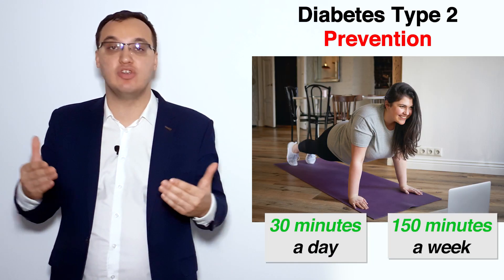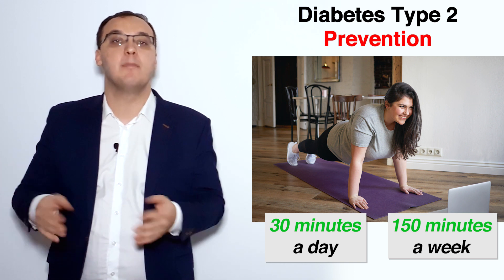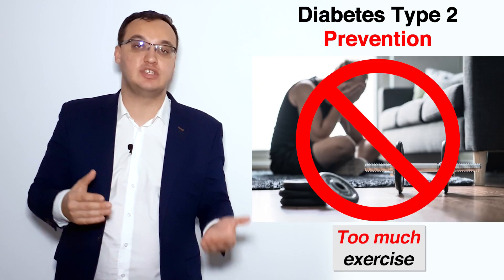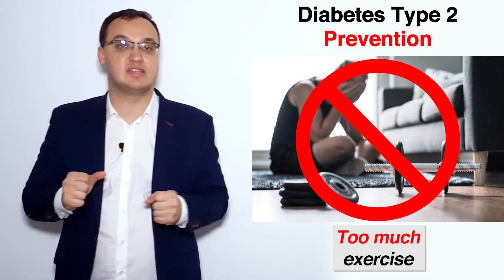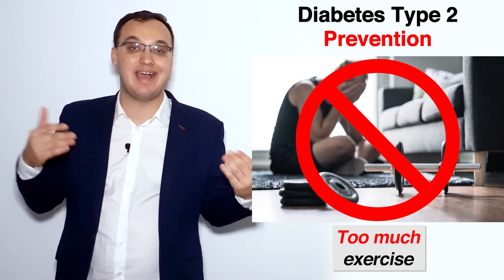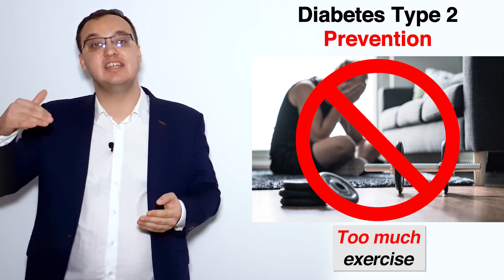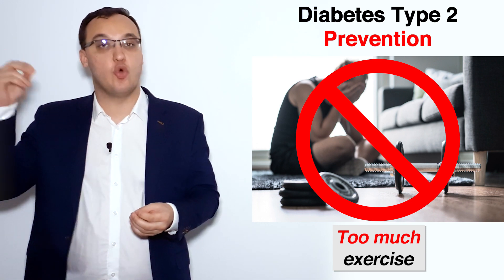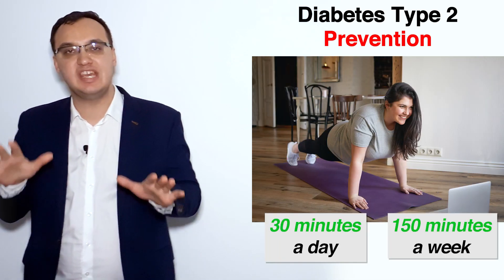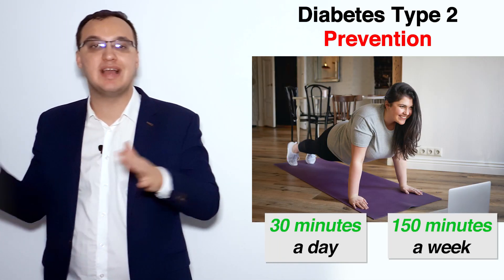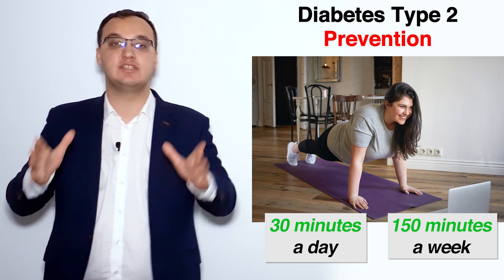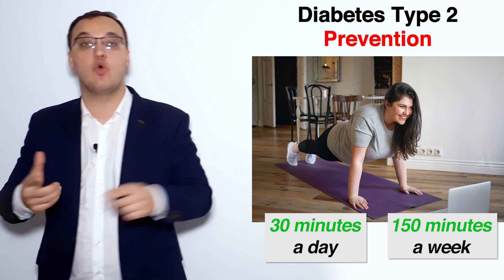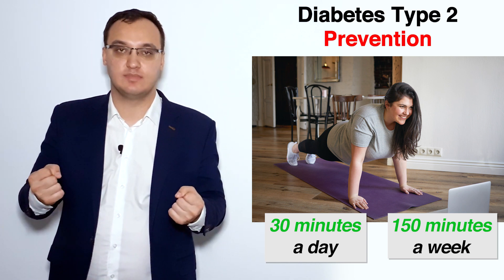Exercise at least 150 minutes per week — it can be more; the more you do, the better. But there is a certain threshold: if you do 500 minutes or 2,000 minutes like athletes do, then it becomes toxic and bad for you. Sport and exercise are also harmful if you overdo it. So keep around 150 to 300 minutes per week — at least 30 minutes a day of walking, bicycling, or strength training.